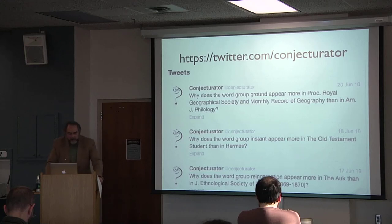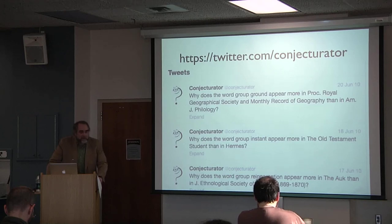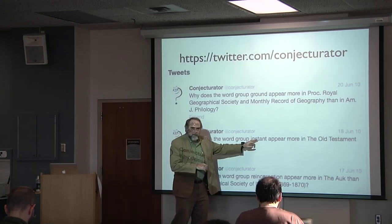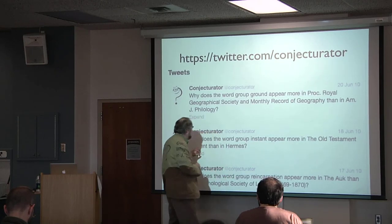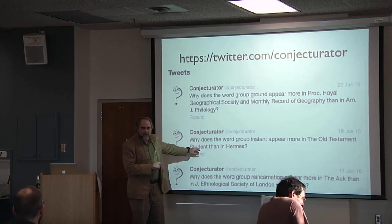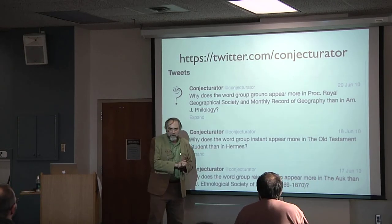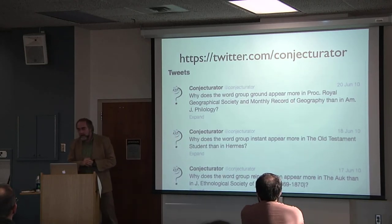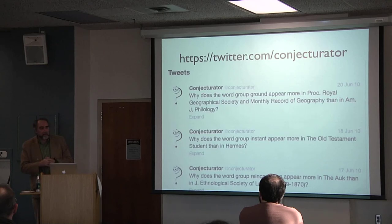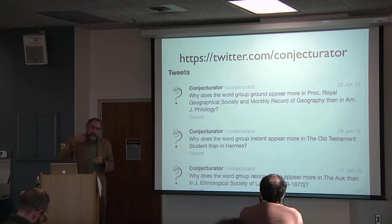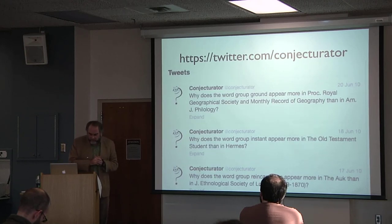The tool didn't allow you to burrow down and ask: what is the word group 'instant'? What would it mean that Old Testament Studies is not talking about the instant as much as people writing for Hermes? We had no way to drill down — and this is a feature I know we've been trying to build into Voyant, and I think is important to digital humanists doing data mining: you always want to get down into the text to try to confirm and check what you think you're seeing.